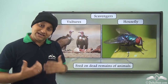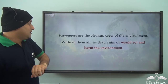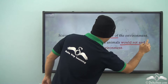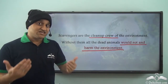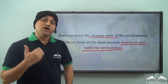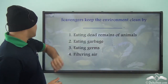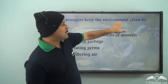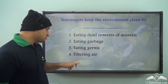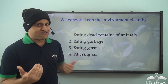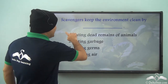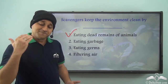Vultures and house flies are actually scavengers. Scavengers are the cleanup crew of the environment — without them, all dead animals would rot and harm the environment. So a major part of dead animals is eaten by scavengers. How do scavengers keep the environment clean — by eating dead remains of animals, eating garbage, eating germs, or filtering air? Well, they keep the environment clean by eating dead remains of animals, and that is why they are called scavengers.